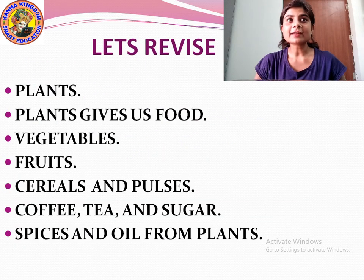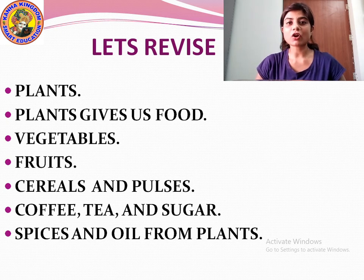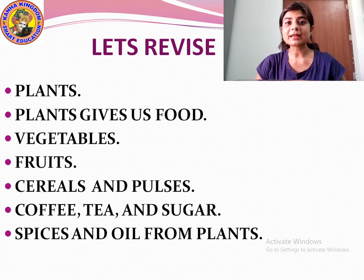We will revise about plants — the plants that give us food. We'll cover vegetables, fruits, cereals and pulses, then coffee, tea and sugar and where they come from, and finally spices and oil that we get from plants.